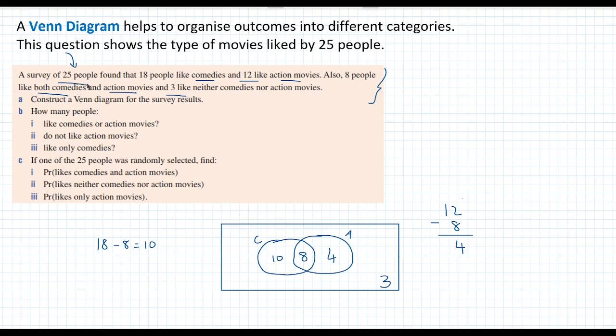Now, we know that there are 25 people in total. So let's see that our numbers add up. So if we add up each of these numbers, so 10 plus 8 plus 4 plus 3, we should get 25. So that's 18, 22, and that is 25. Then we know 18 people like comedies. So the numbers inside the comedy category circle should add up to 18. And 10 plus 8 is 18.